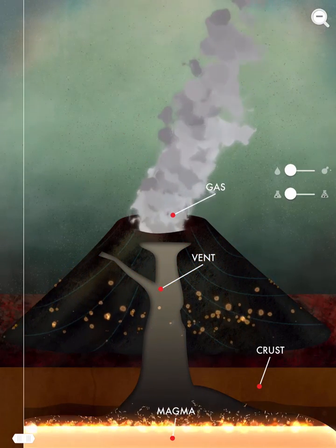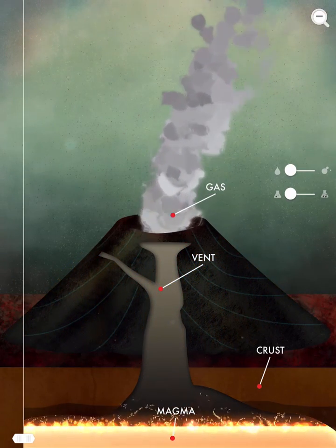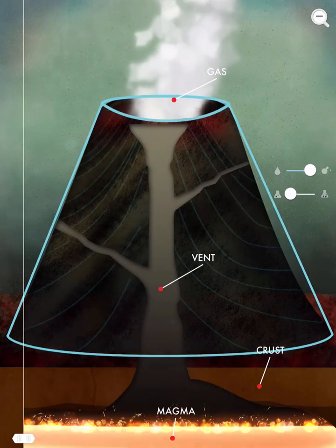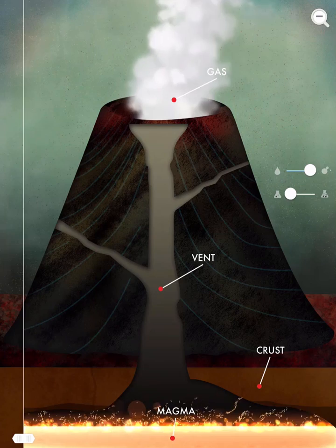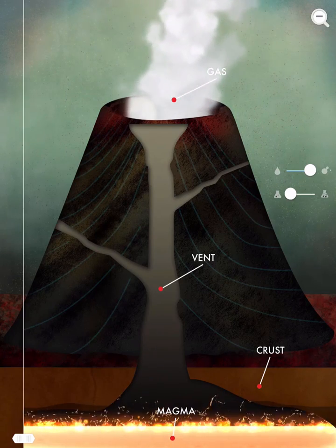Let's see what happens when I use this toggle on the side to make the magma a little bit thicker. What we're looking at right here is a plug dome volcano.